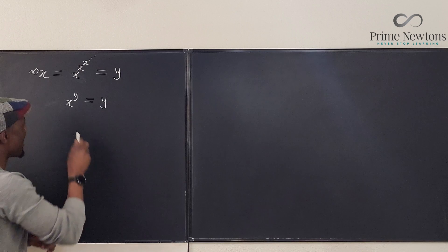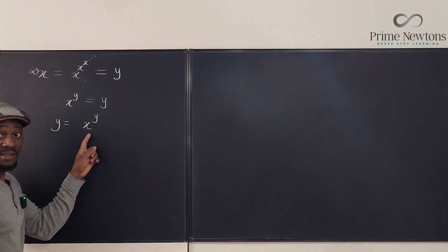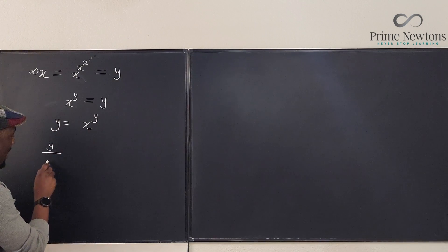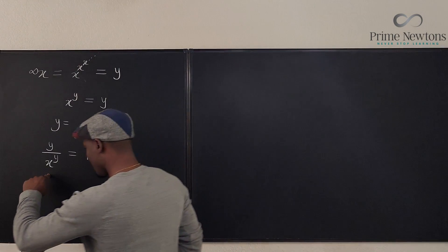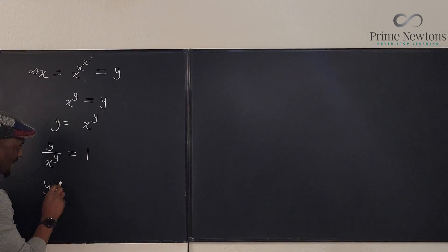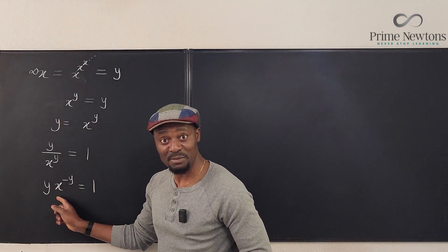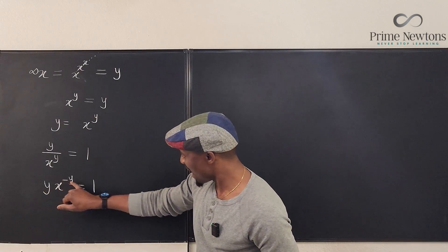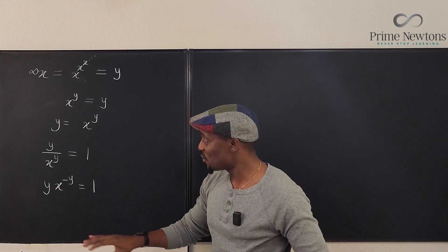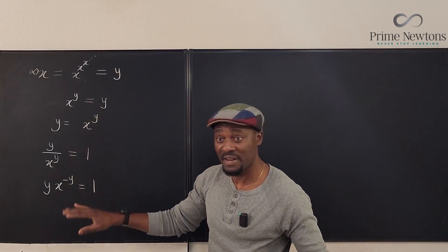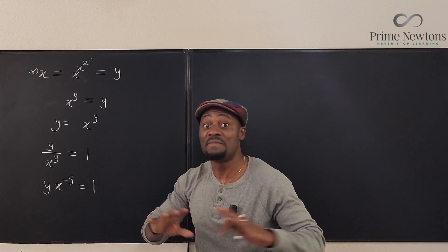How do I know this is going to work? I don't. It doesn't work for every number, but it works for some, and those are the numbers we want to find. Since the infinite tower of x's equals y, we have x to the y equals y. So I'm going to divide both sides, giving me y divided by x to the y equals 1. Let me rewrite this: mathematically, this is the same as y times x to the negative y equals 1, applying the law of exponents.